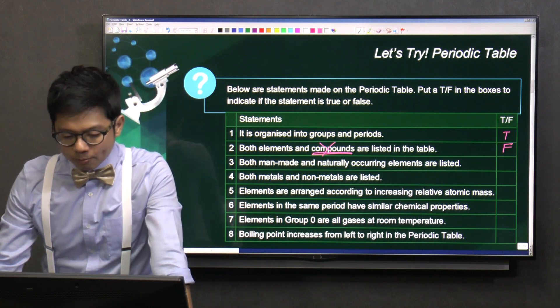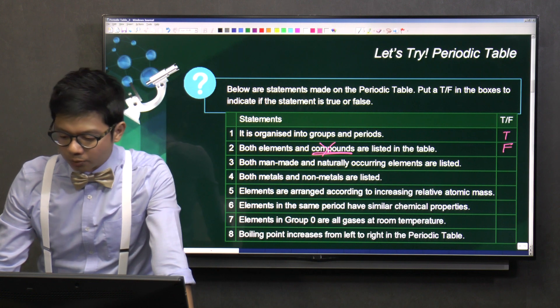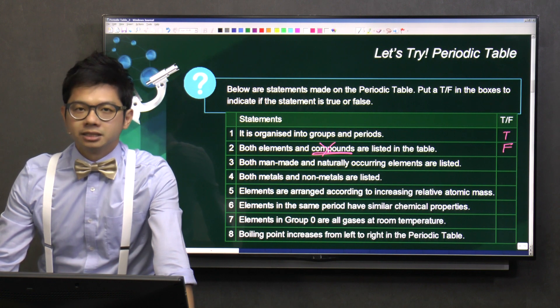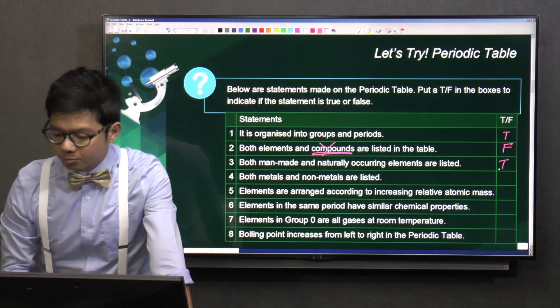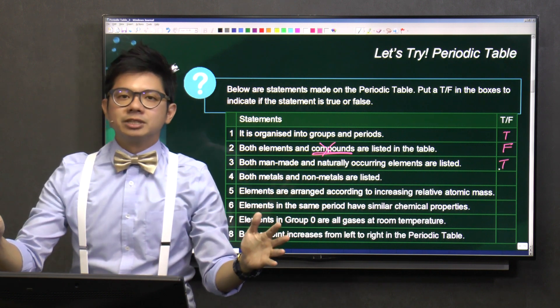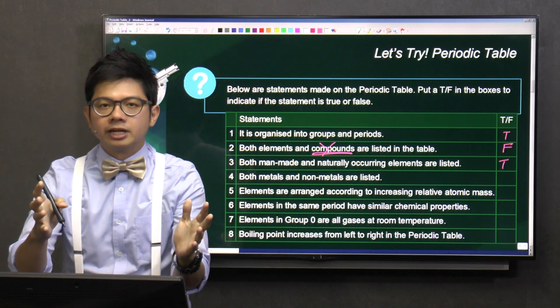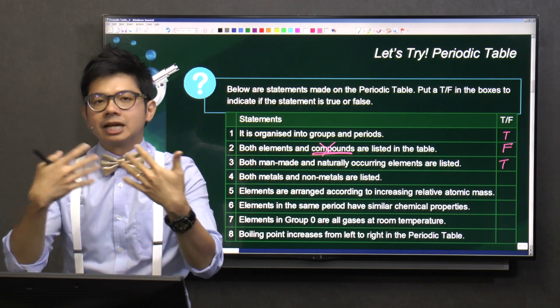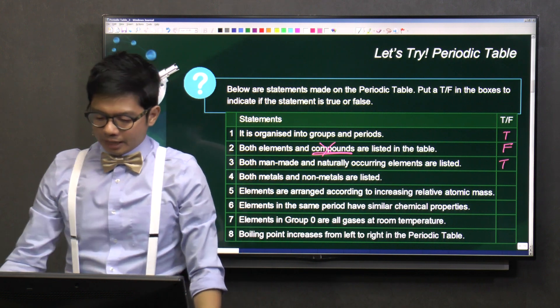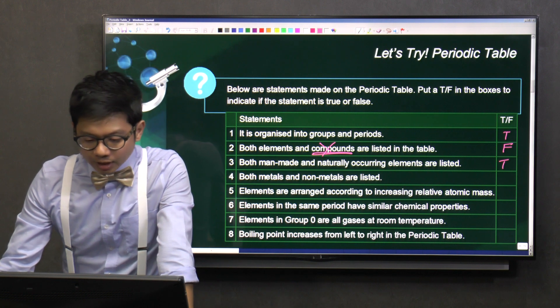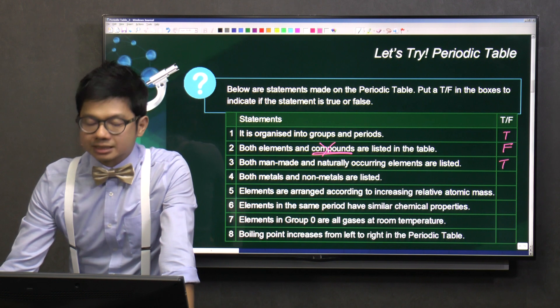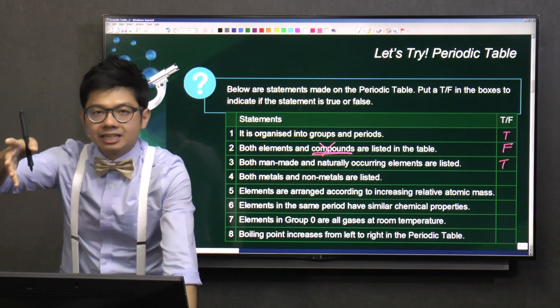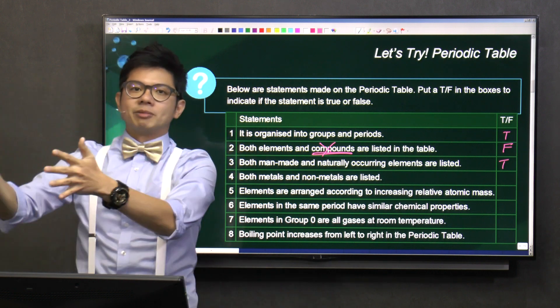And both man-made and natural occurring elements are listed. This is true because the periodic table consists of all the elements that you can find on Earth, whether it's man-made or it's natural occurring. And next, number four, both metals and non-metals, they are listed. Yes, remember the zig-zag line? It separates the metals from the non-metals.